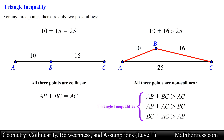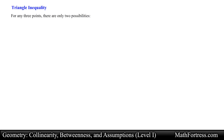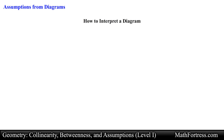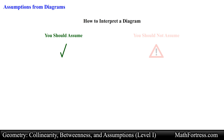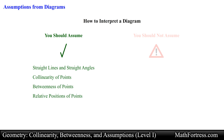These three inequalities must always be obeyed for any triangle in a plane. Let's end this section by going over assumptions from diagrams. It is important to understand what you should and should not assume when you look at a diagram. In general, one interprets a diagram by assuming the following: straight lines and straight angles, collinearity of points, betweenness of points, and relative positions of points.